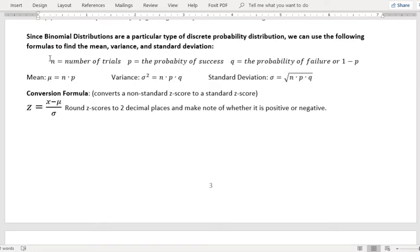N, P, and Q. N is the number of trials, P is the probability of success, and Q is the probability of failure, which is 1 minus P.